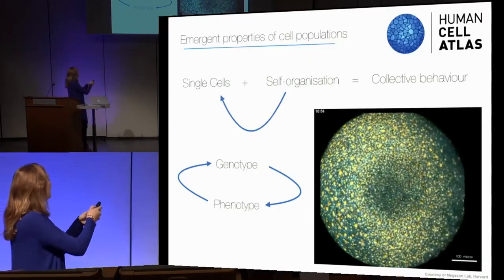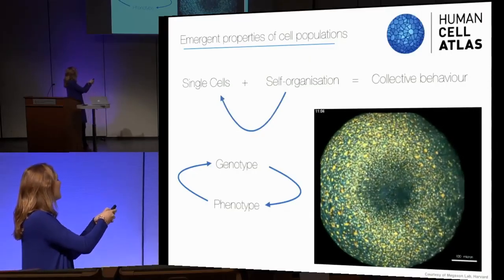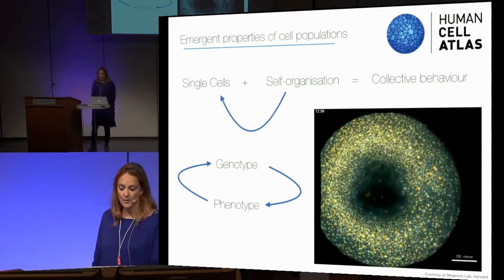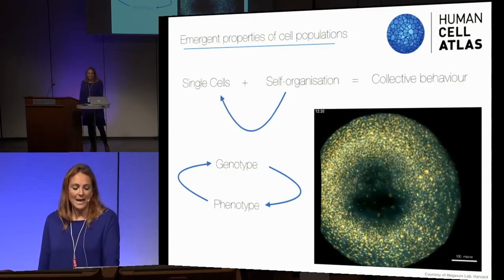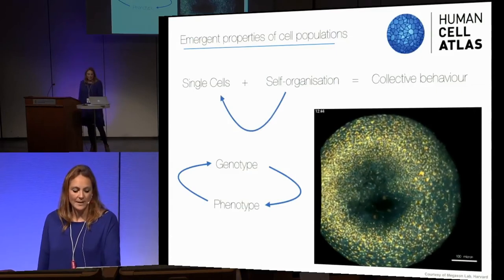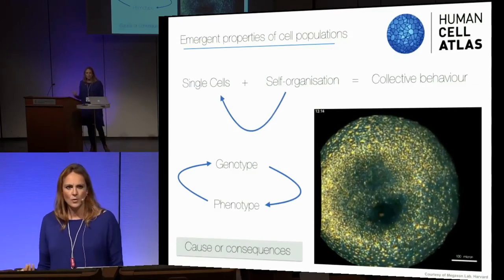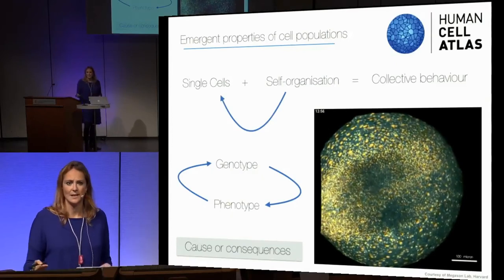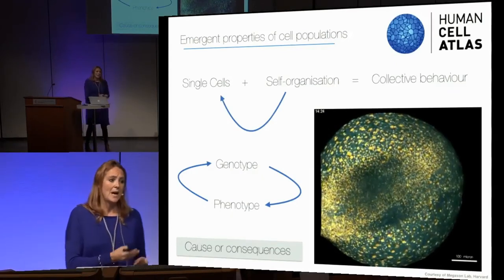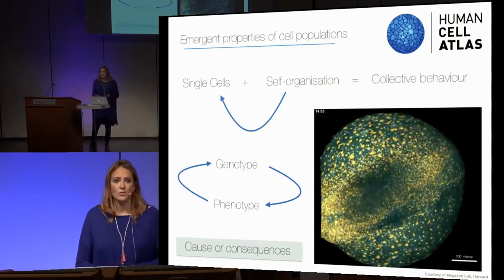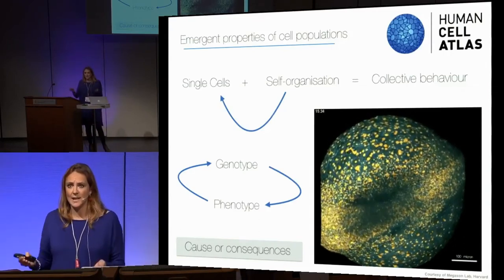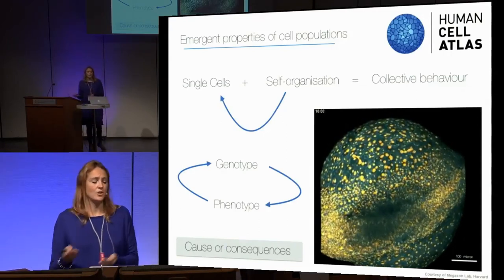The genotype clearly defines a phenotype, but there is clearly a feedback: depending on the phenotype, we come to the question of what is the cause and consequence of a cell type or cell state — which genes are expressed just because this cell type needs to secrete something, and which genes are really required to make that cell.